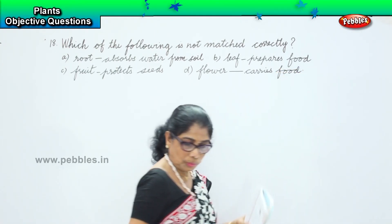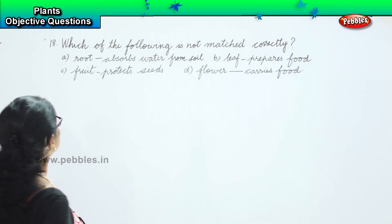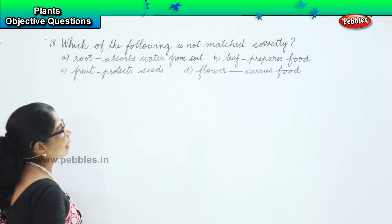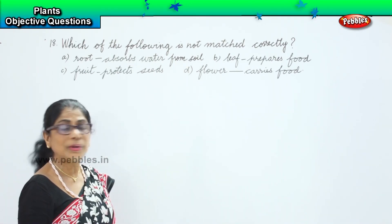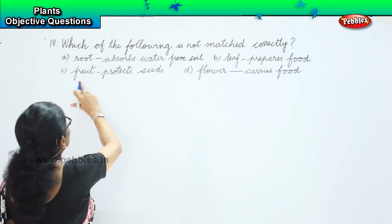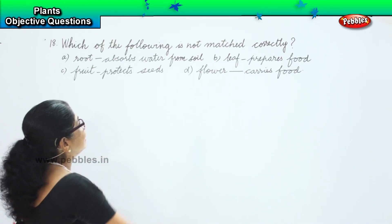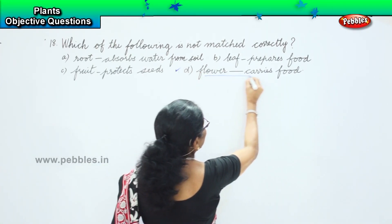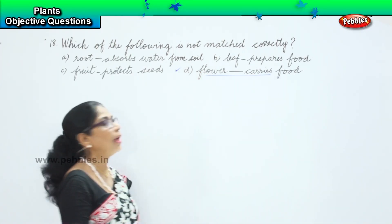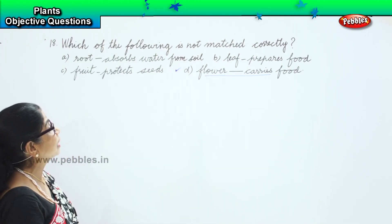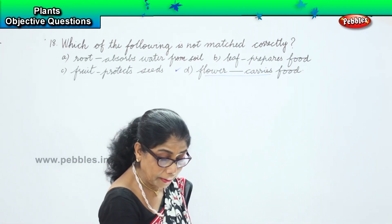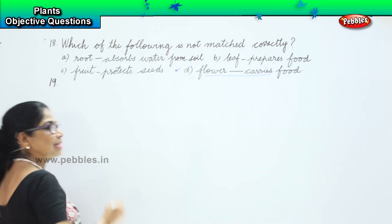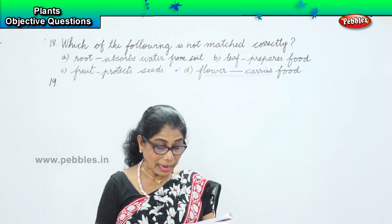Let's look at which one is mismatched. Root absorbs water from the soil — that is matched correctly. Leaf prepares food — yes, that's correct. Fruit protects seeds — yes. The mismatched one is option D: flower carries food. Flower cannot carry food, so option D is the mismatched one.